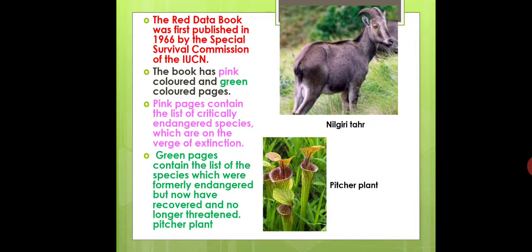Some factors related to the Red Data Book: the Red Data Book was first published in 1966 by the Special Survival Commission of the IUCN. The book has two colored pages — pink and green.